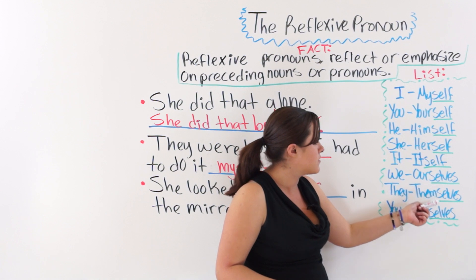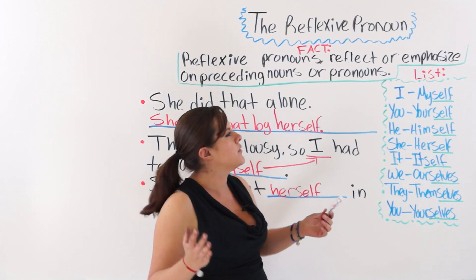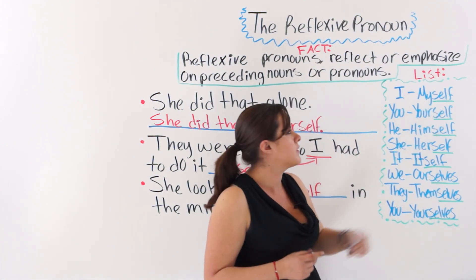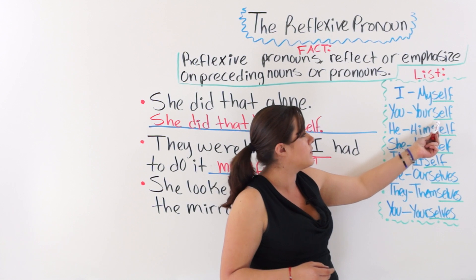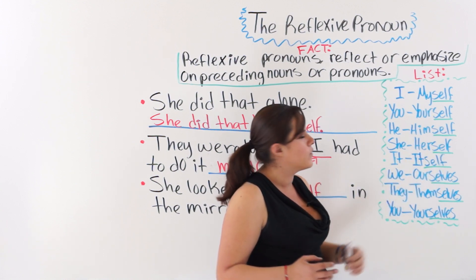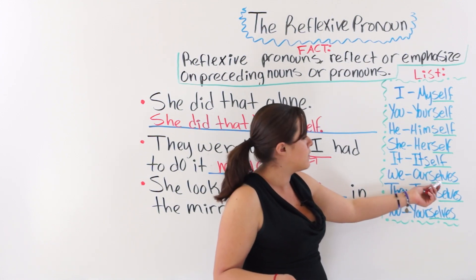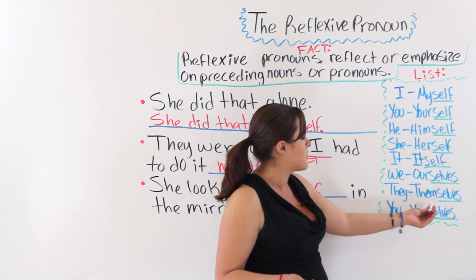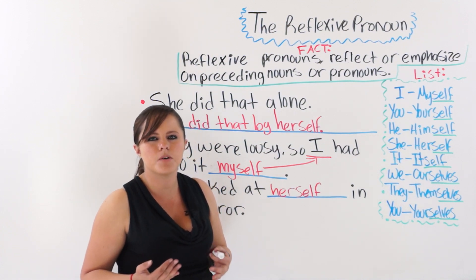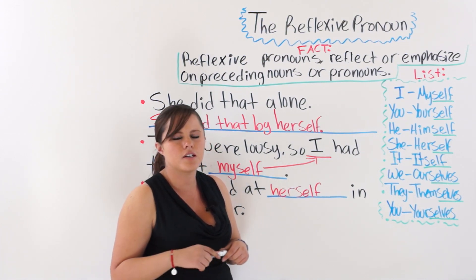I highlighted the endings of each of these reflexive pronouns. I want you to notice something: 'I' is a singular personal pronoun — myself ends with 'self.' 'You' is also singular — ends with 'self.' 'He' — ends with 'self.' 'She,' singular — 'self.' When it is a plural personal pronoun, 'we' ends with 'ourselves,' 'they' gives 'themselves,' 'you' plural gives 'yourselves.' So singular personal pronouns use the ending '-self,' and plural personal pronouns use the ending '-selves.'